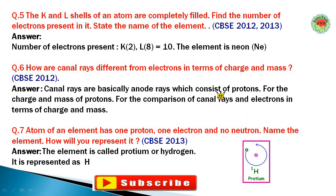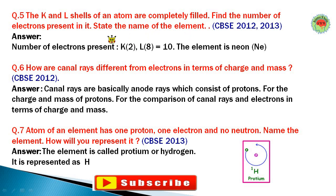Question number five: The K and L shells of an atom are completely filled. Find the number of electrons present and state the name of the element. K shell holds 2 electrons and L shell holds 8 electrons, giving a total of 10 electrons. An element with 10 electrons is neon (Ne).